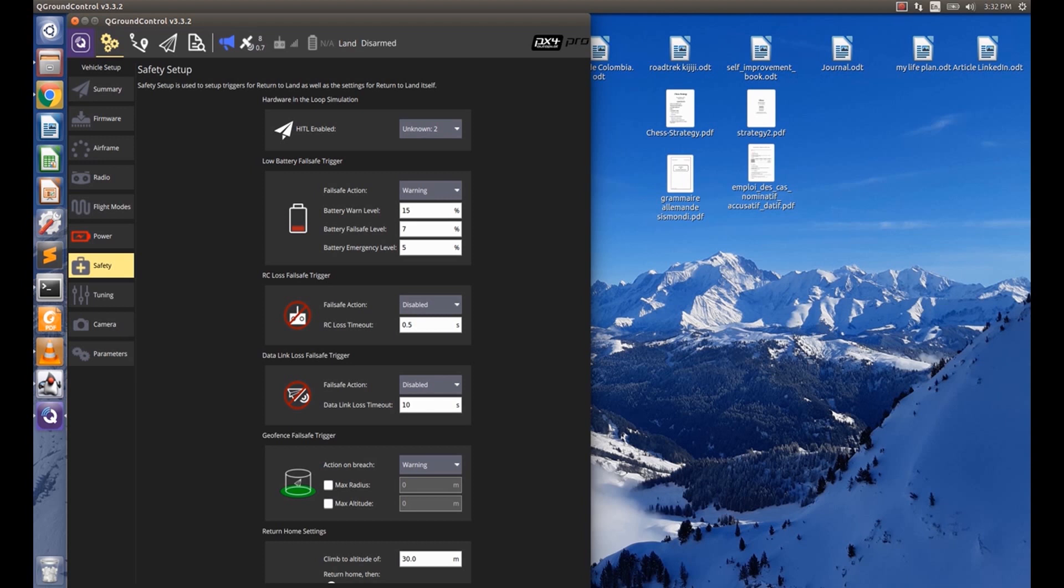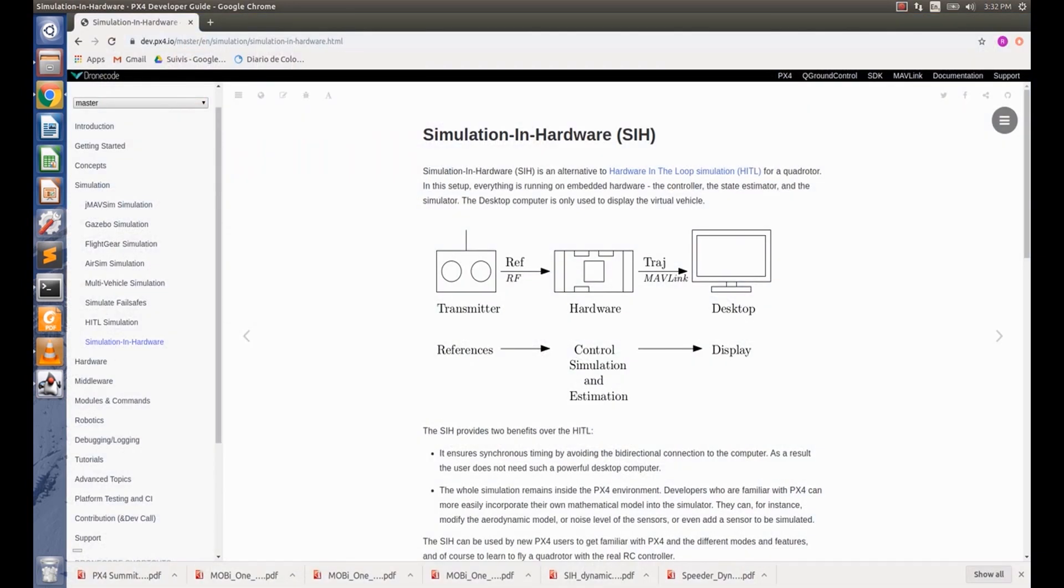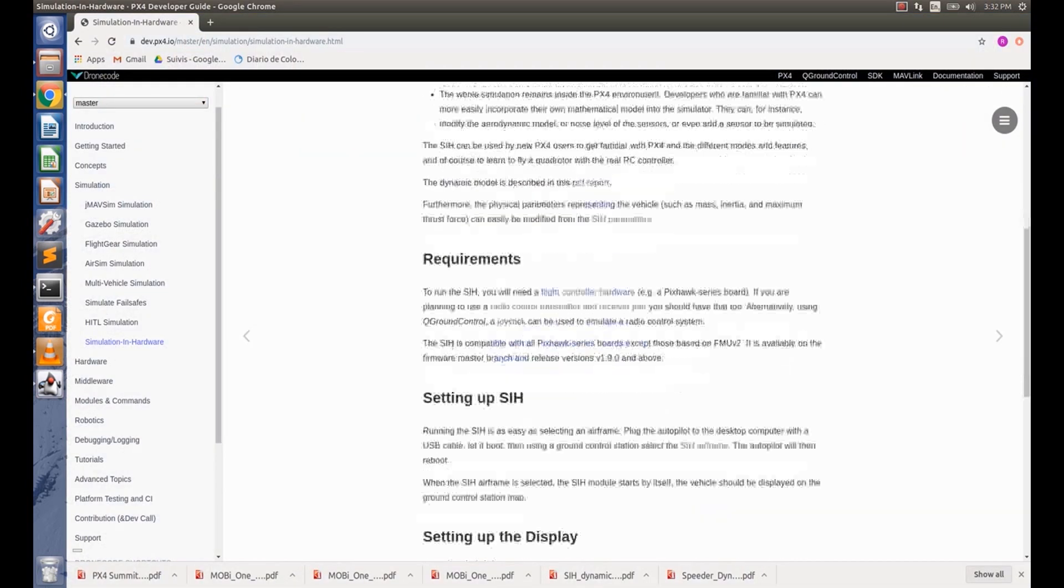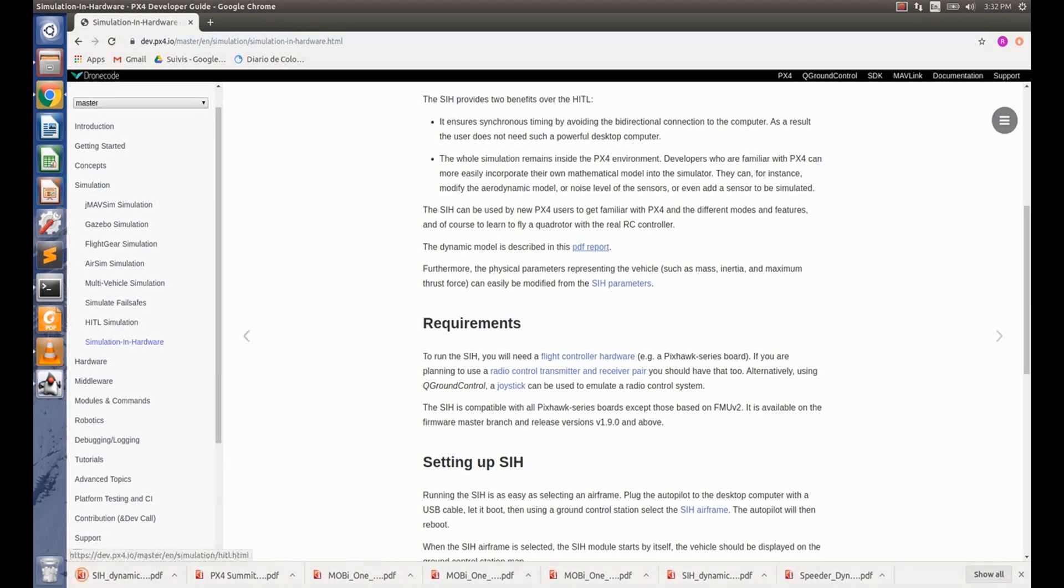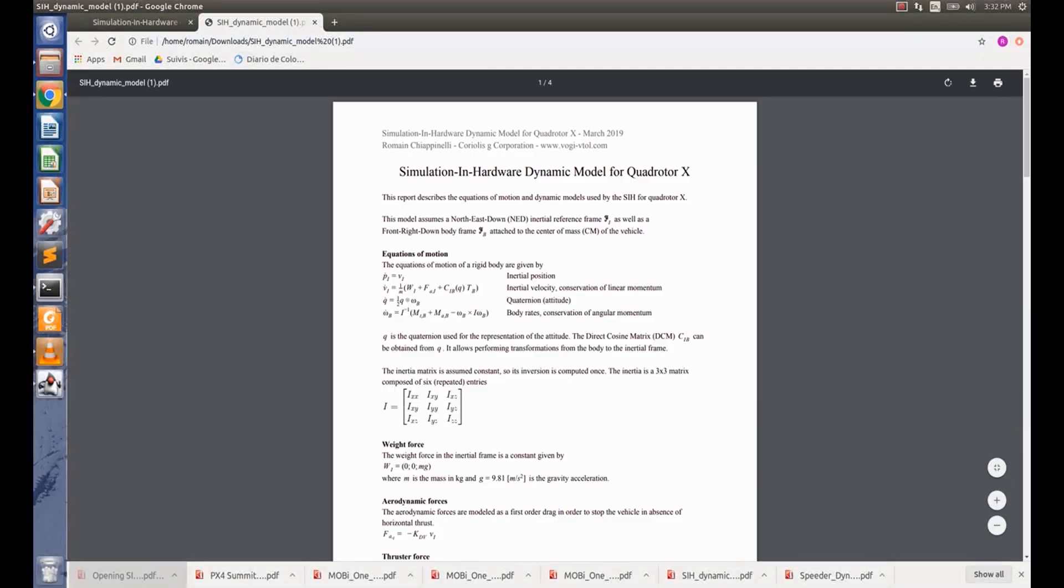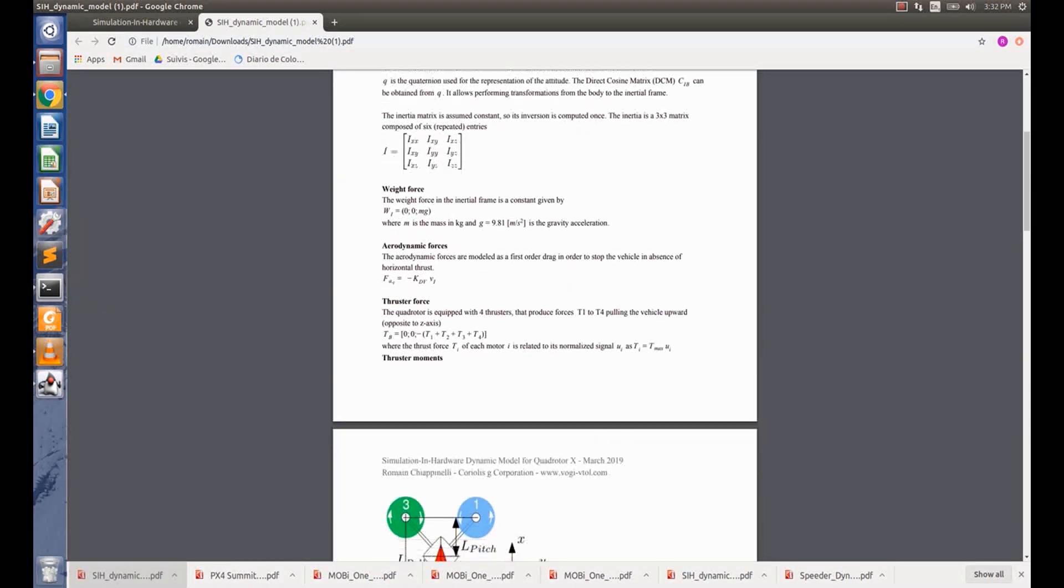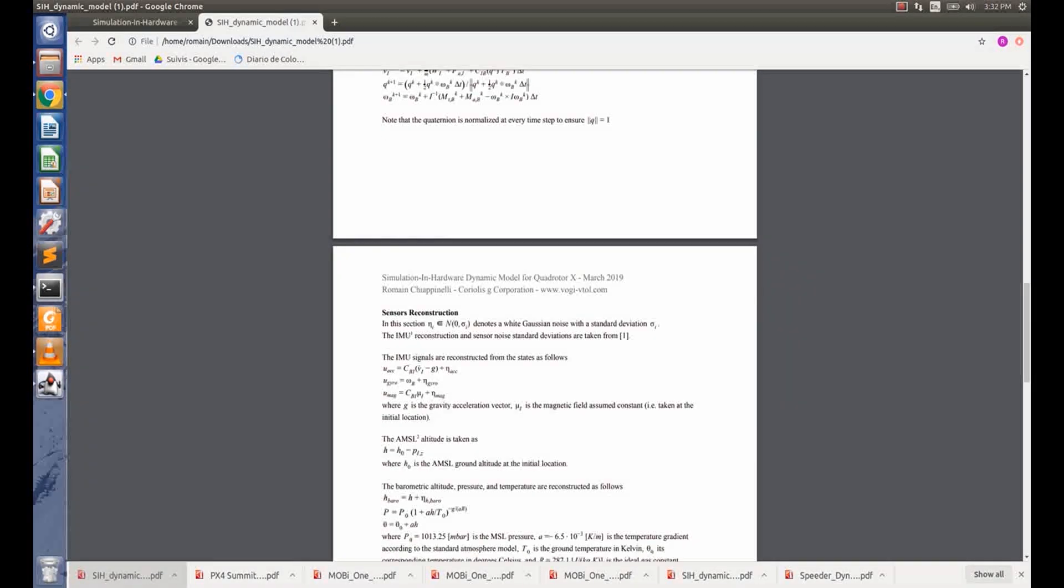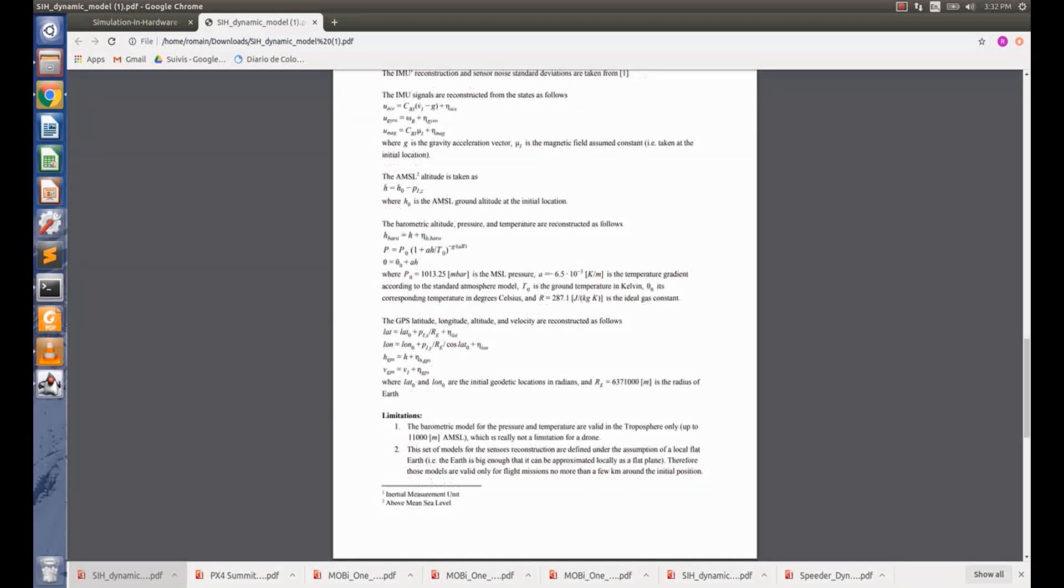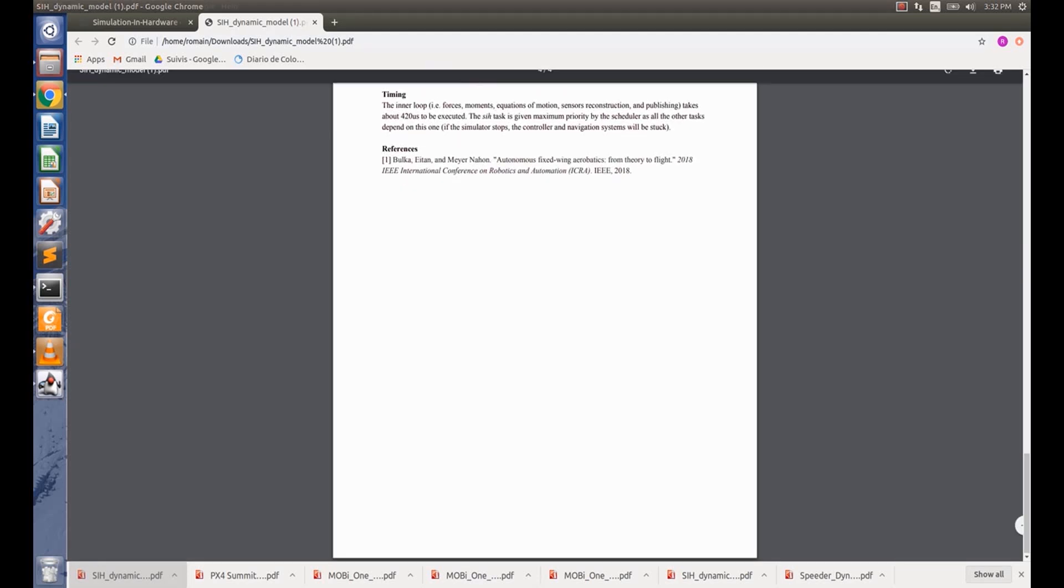Now, let's close QGroundControl and have a look at the SIH documentation. This is the SIH documentation in the dev guide, and here is the PDF report for the dynamic model. It is available mainly for researchers willing to understand what is happening under the hood. This contains the equations of motion, the model for the forces and moments, the simple aerodynamic model, the sensor's reconstruction, some information on how the sensor noise standard deviation were obtained, as well as additional notes.